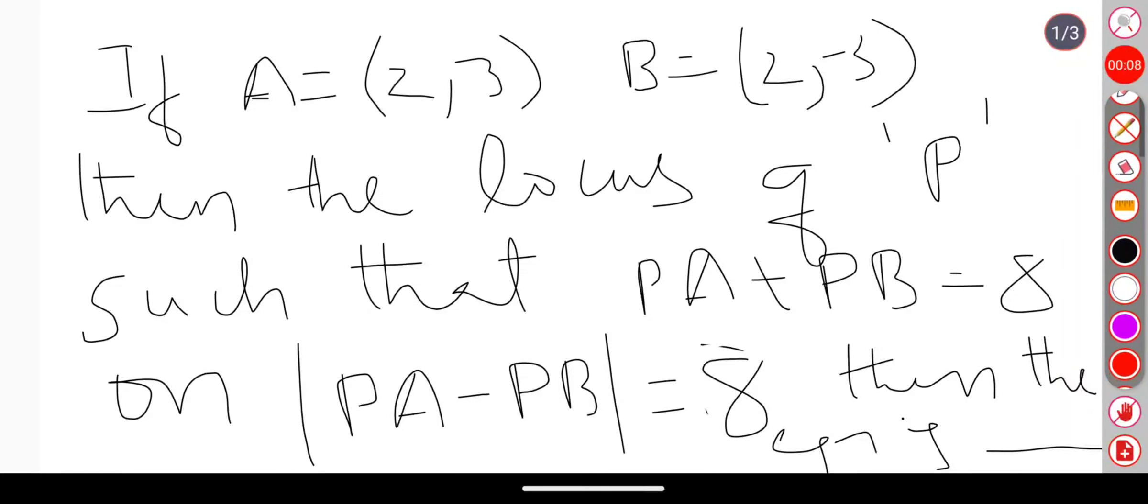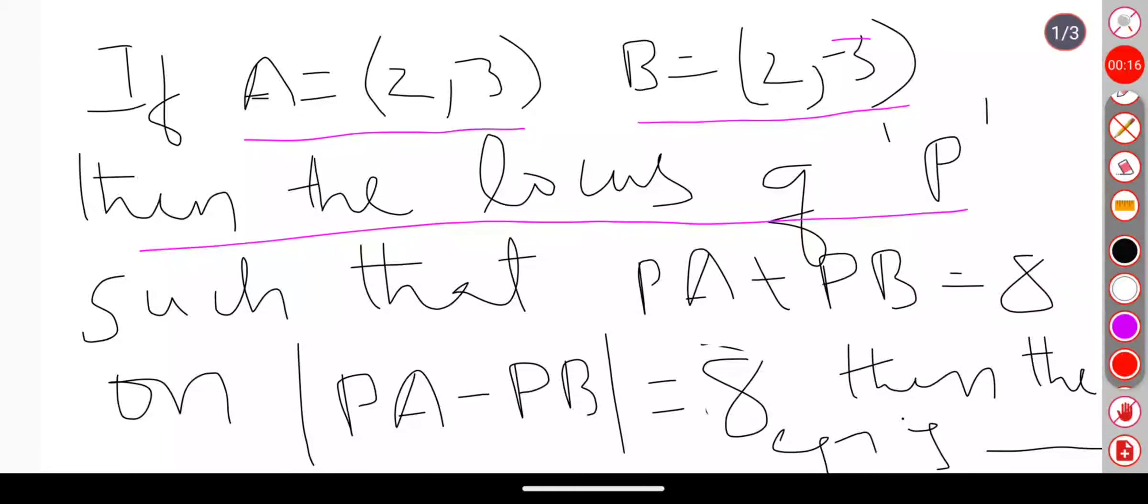The question says if A equals (2,3) and B equals (2,-3), then the locus of P such that PA plus PB is equal to 8 or PA minus PB is equal to 8, then the equation is dash.